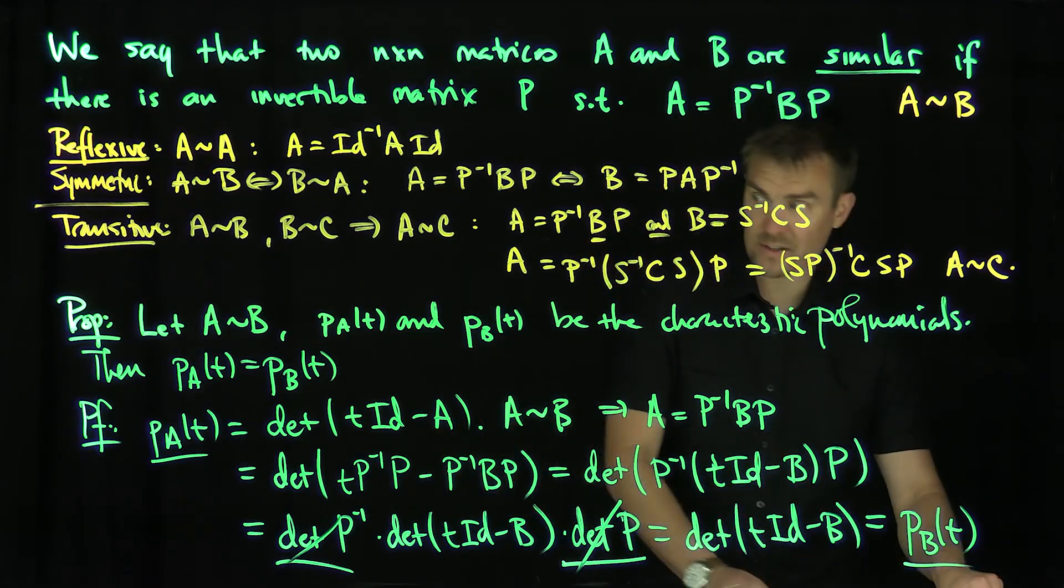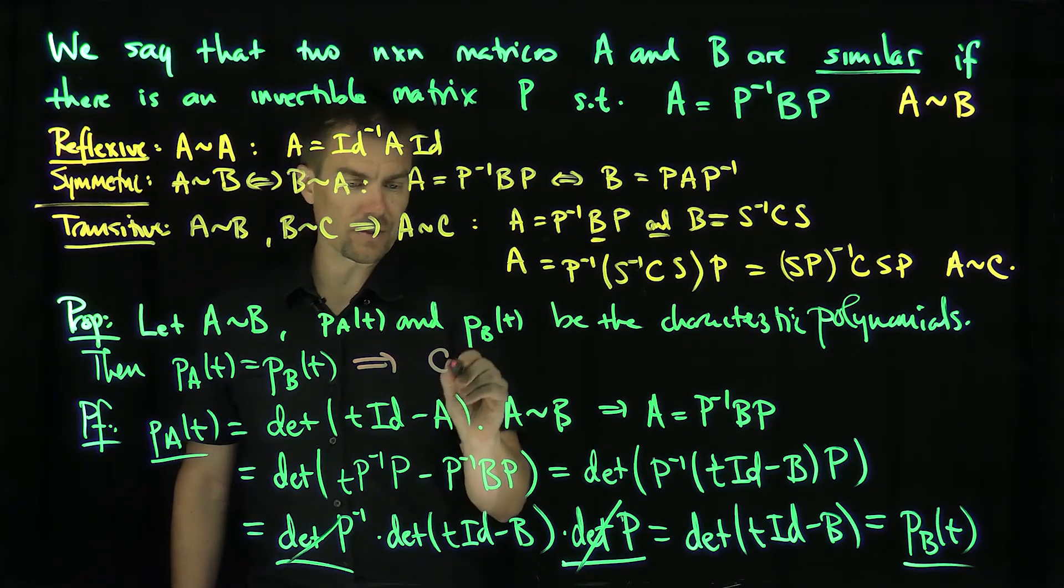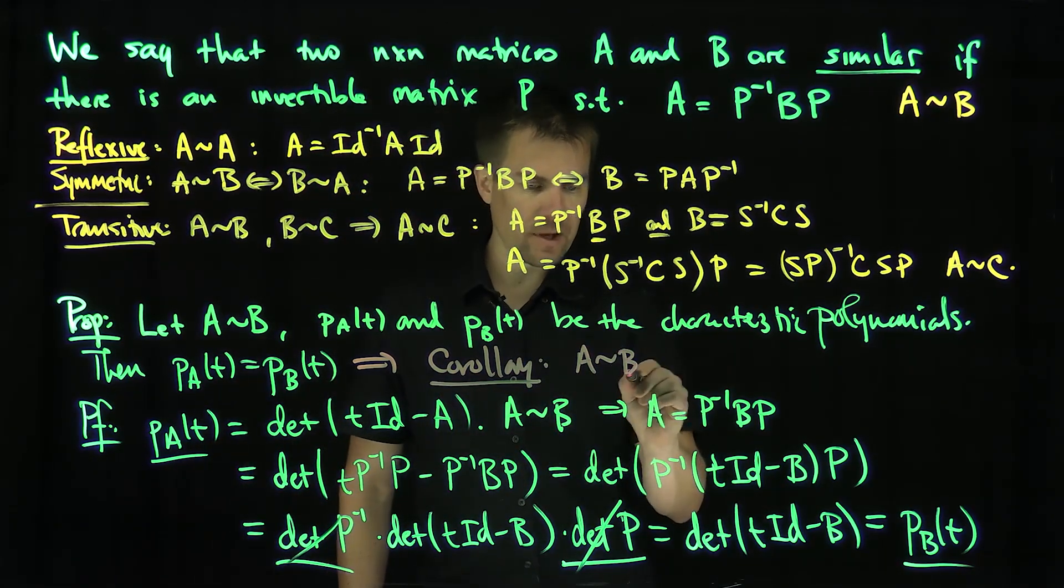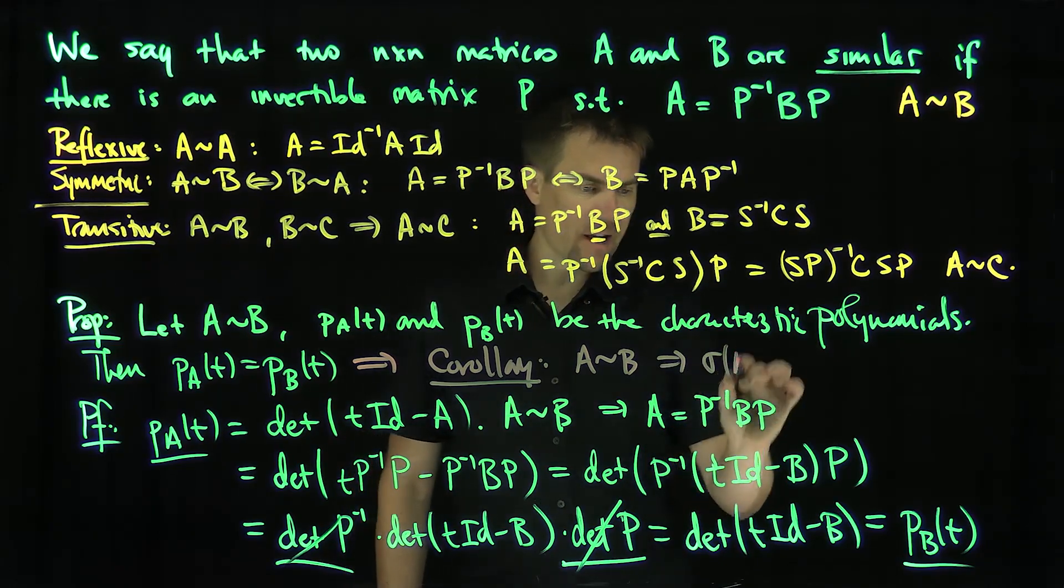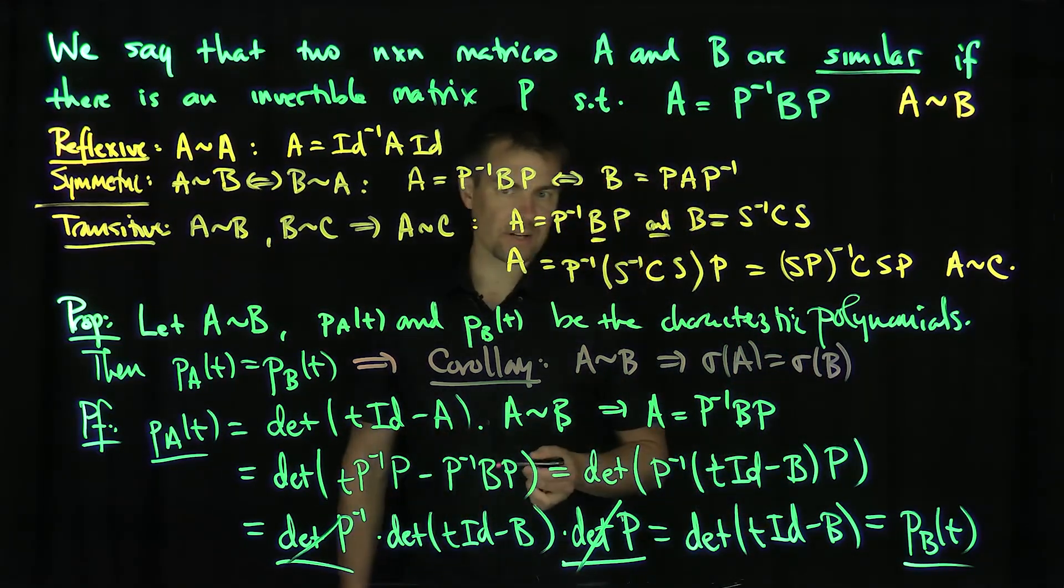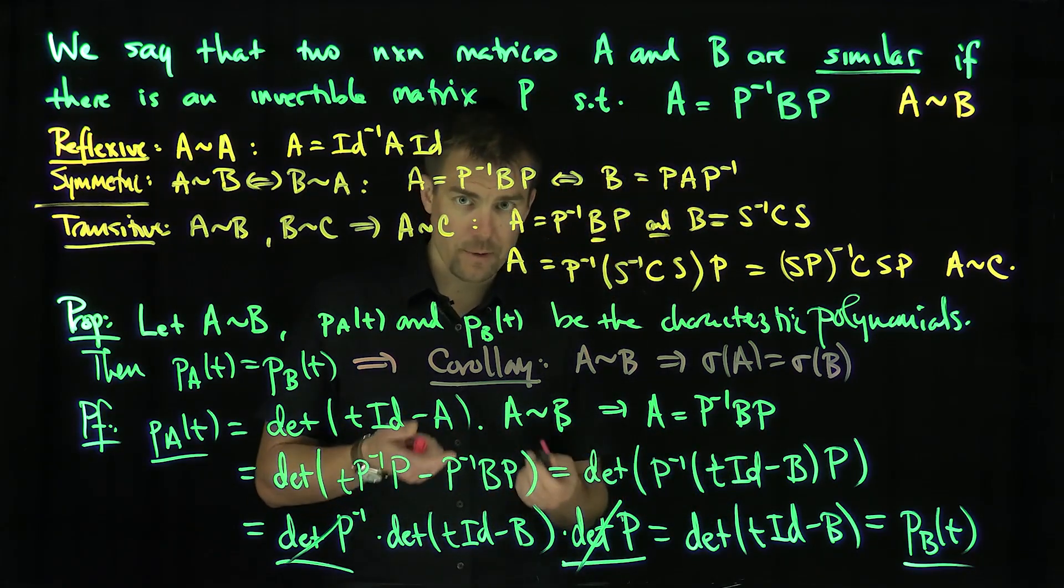So now an immediate consequence of this, an immediate corollary, since they have the same characteristic functions, this immediately implies that if A is similar to B, then the eigenvalues of A, the spectrum of A, equals the spectrum of B. In other words, they have the same set of eigenvalues.